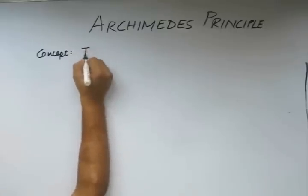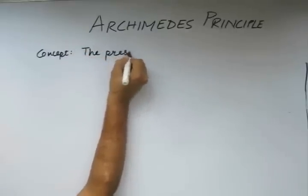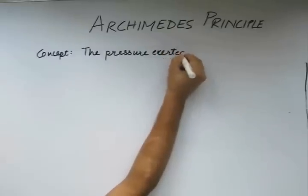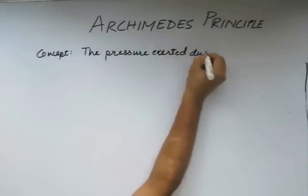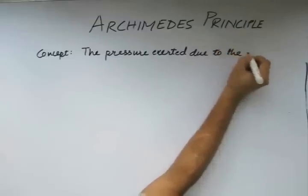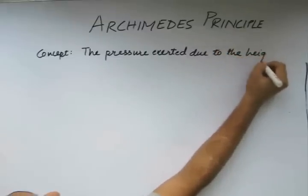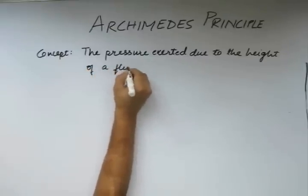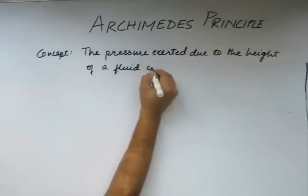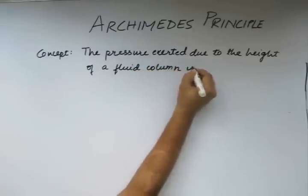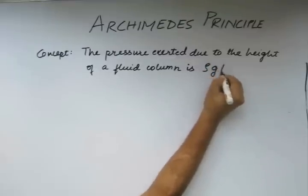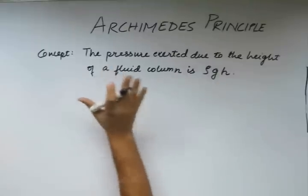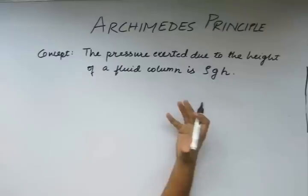So the pressure exerted due to the height of the fluid is rho g h. This is the basic concept that we will be following in describing what Archimedes principle is.